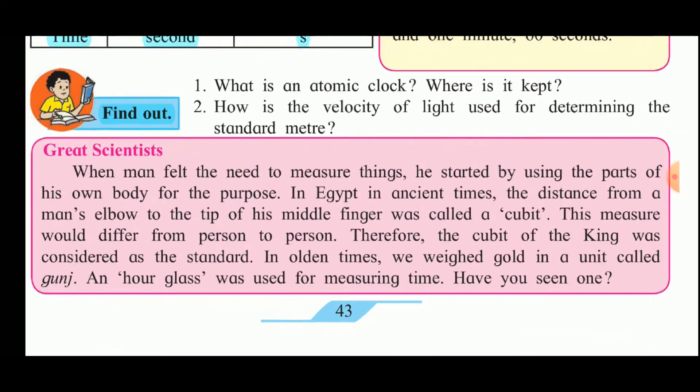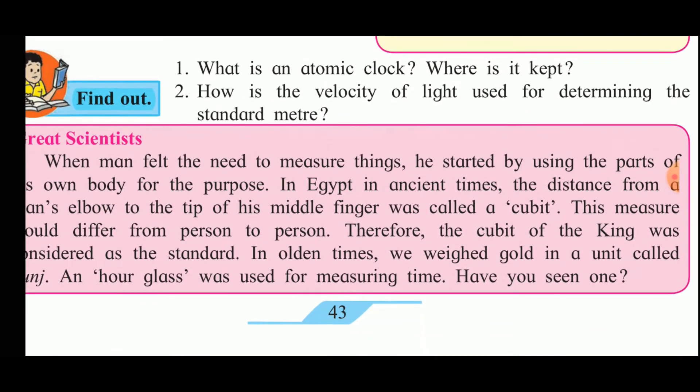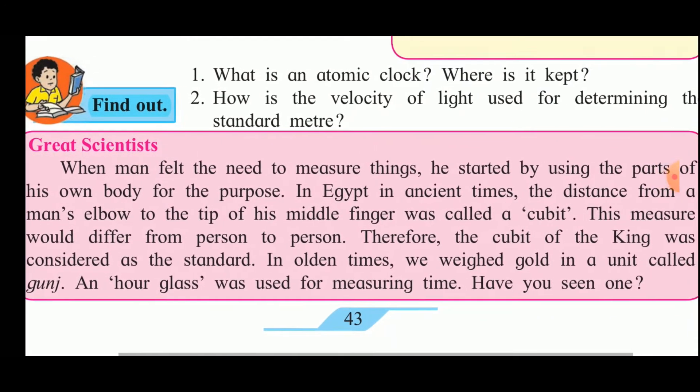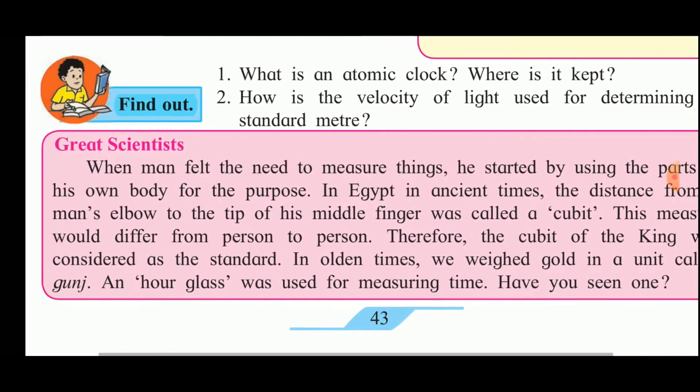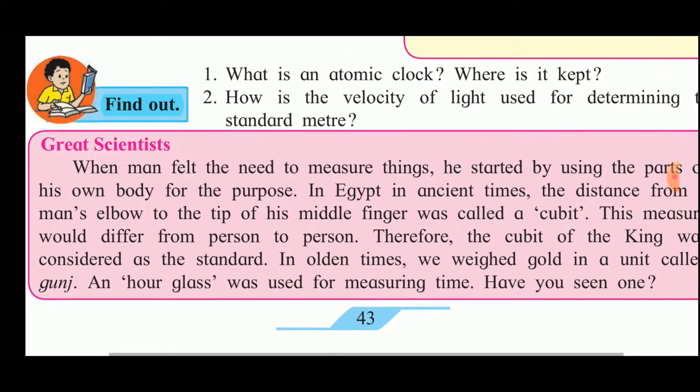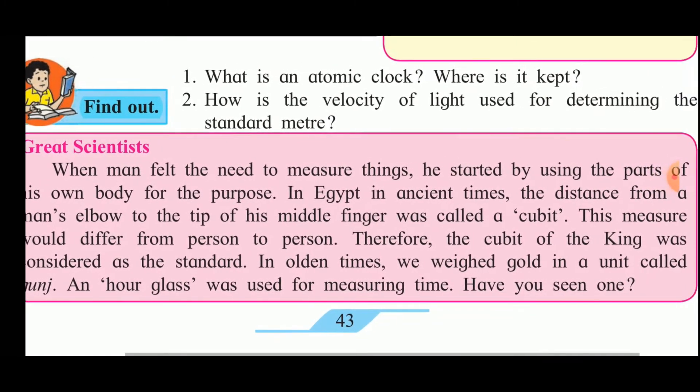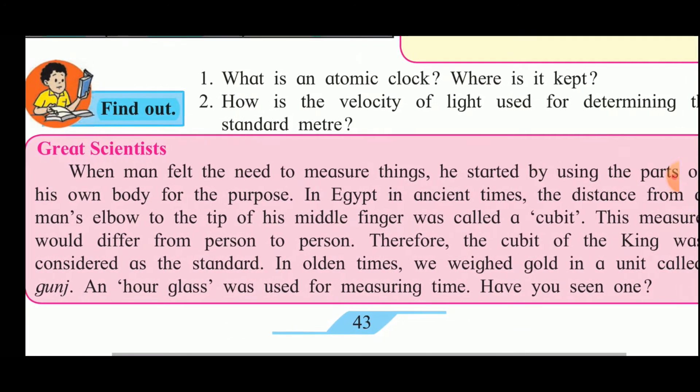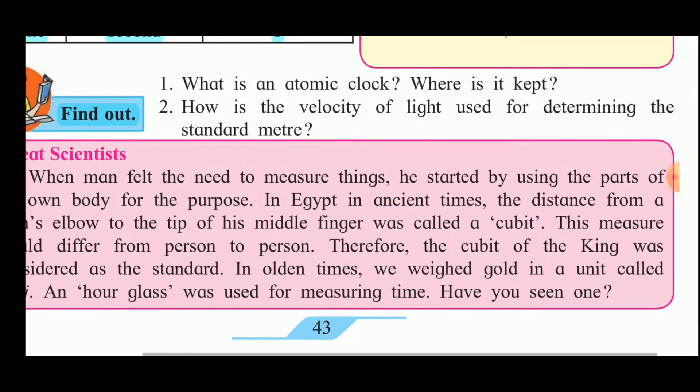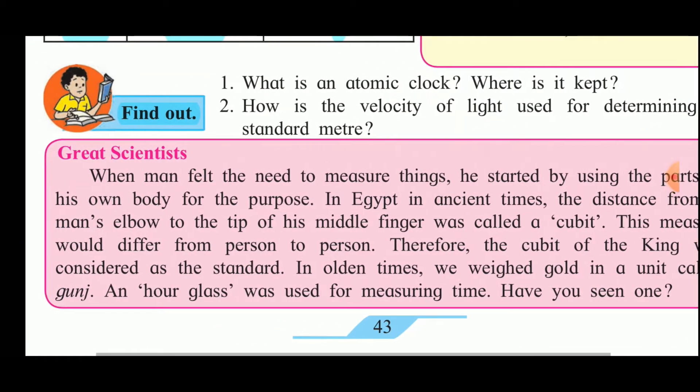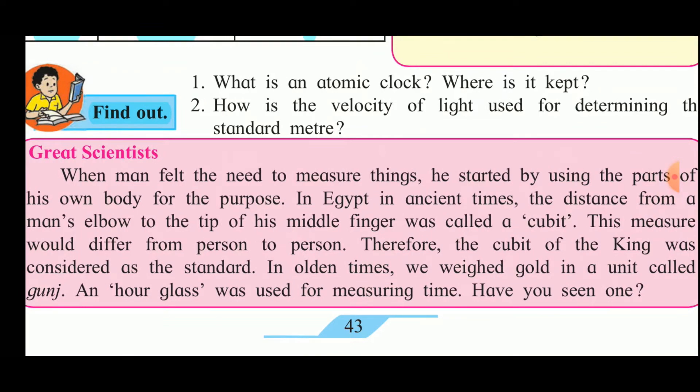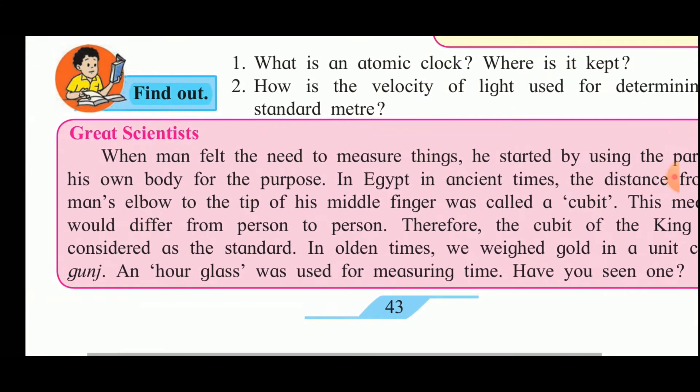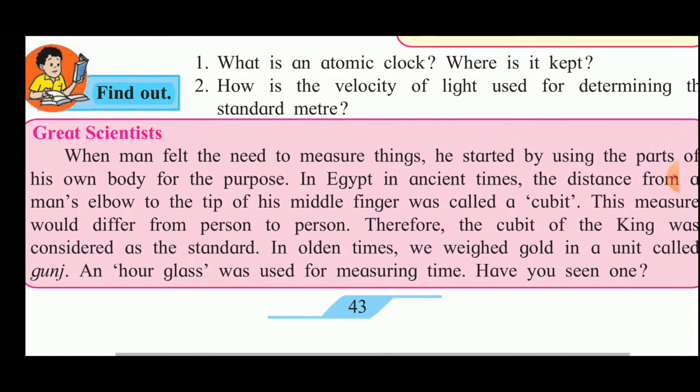When man felt the need to measure things, he started by using the parts of his own body for the purpose. In Egypt, in ancient times, the distance from the man's elbow to the tip of the middle finger was called as cubit. This measure would differ from person to person like a handspan. Therefore, the cubit of the king was considered as the standard. In olden times, we weighed gold in a unit called gunj. An hourglass was used for measuring time.